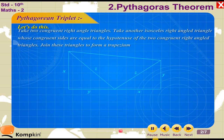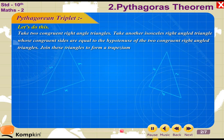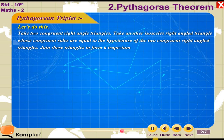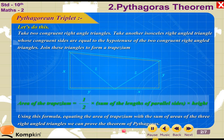Let's do this: Take two congruent right-angled triangles. Take another isosceles right-angled triangle whose congruent sides are equal to the hypotenuse of the two congruent right-angled triangles. Join these triangles to form a trapezium. The area of the trapezium equals half the sum of the parallel sides times the height. Using this formula, equate the area of the trapezium with the sum of the areas of the three right-angled triangles to prove the theorem of Pythagoras.